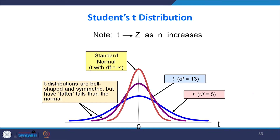Look at the connection between T distribution and Z distribution. T distributions are bell-shaped and symmetric but have flatter tails than the normal. When the degrees of freedom is small, say 5, it is flatter; when degrees of freedom is 13 and higher, when degrees of freedom approaches infinity, it behaves like a Z distribution. That is why in many software packages there is no separate option for Z test — only T test — because when sample size increases, the T distribution behavior matches Z distribution.